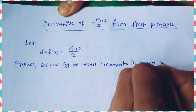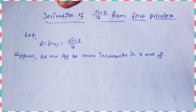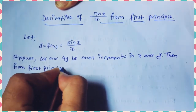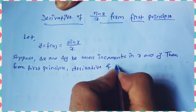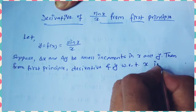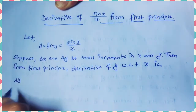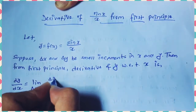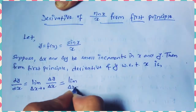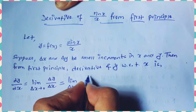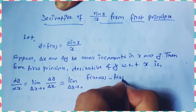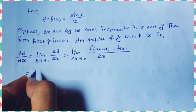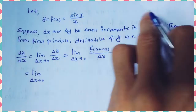Suppose δx and δy be small increments in x and y. Then from the first principle of derivative, we can write: dy/dx = lim(δx→0) δy/δx = lim(δx→0) [f(x + δx) − f(x)] / δx.